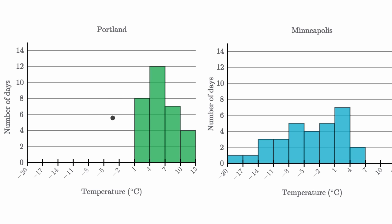What we're going to do in this video is start to compare distributions. Here we have two distributions that show the various temperatures different cities get during the month of January.